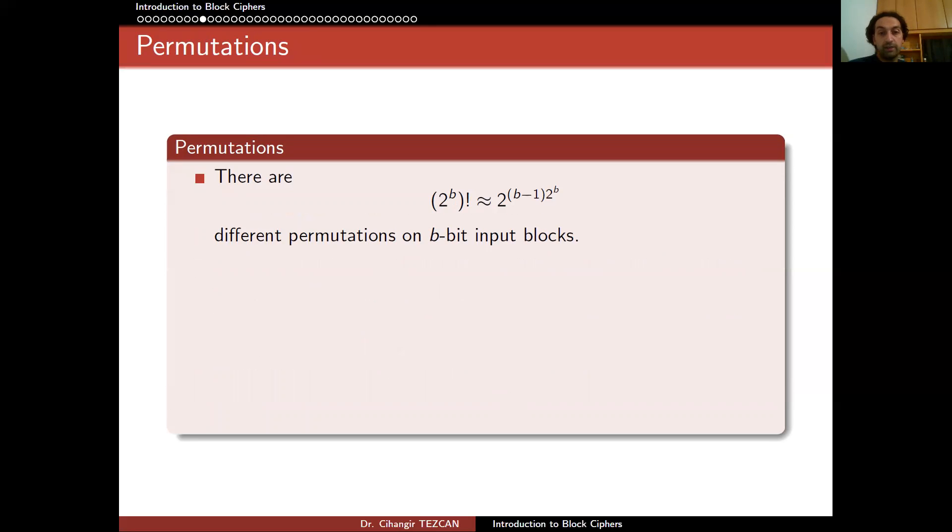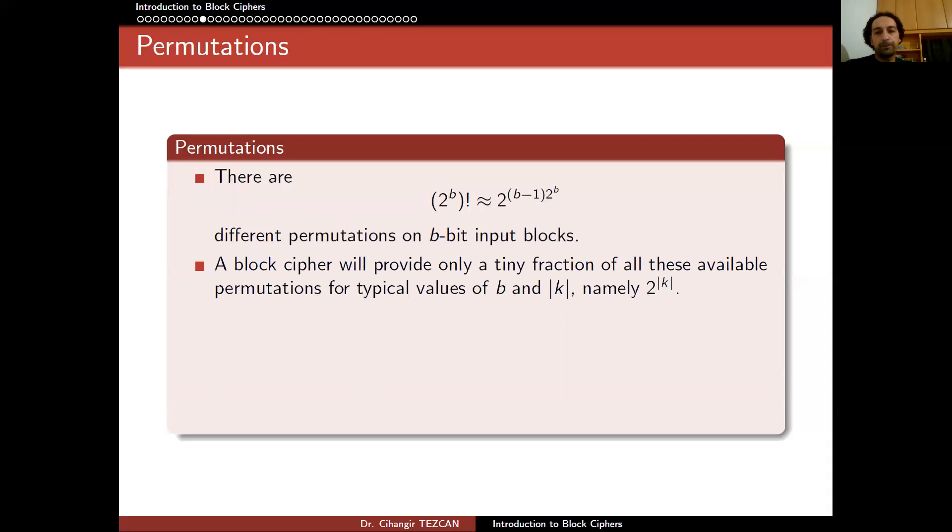So how many permutations can we have from 2 to the b elements to itself? Since first block can be sent to 2 to the b different values, the second one can be sent to 2 to the b minus one elements and so on. This means that we can have 2 to the b factorial different permutations, which is approximately this and it is a very huge number. So there are a huge number of permutations available. And when you design a block cipher and choose a key, actually you will be selecting a small subset of this huge space. So if you design something good, a good block cipher means that the keys you are selecting from these permutations you are selecting from this huge space are actually good permutations.